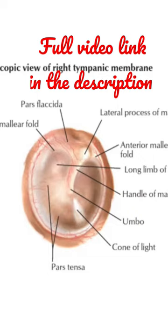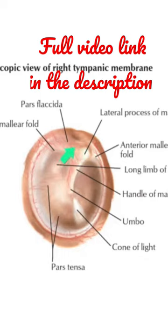When you see the subdivisions of the membrane, the mallular folds divide the tympanic membrane into two parts. This small part is known as the pars flaccida. It is small.